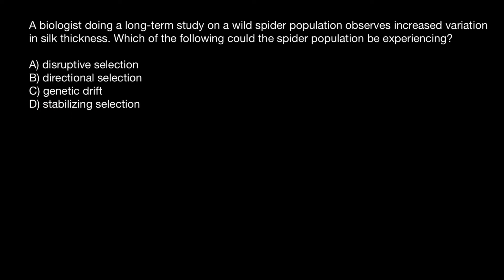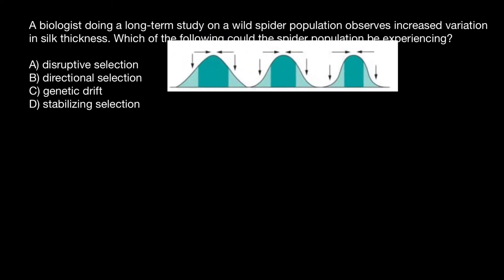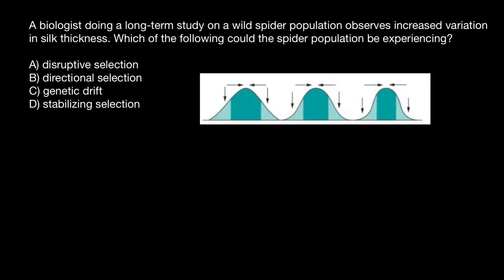Let me start with the end of this list: stabilizing selection. This picture is an example of stabilizing selection. Here, this bell-shaped curve represents distribution of the phenotypes. As you see, these phenotypes here are extreme phenotypes. For example, extremely small, extremely large.